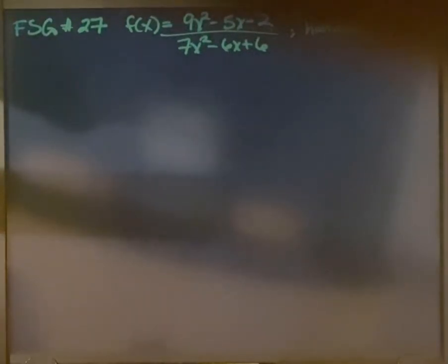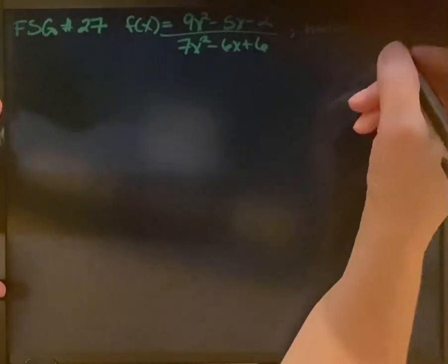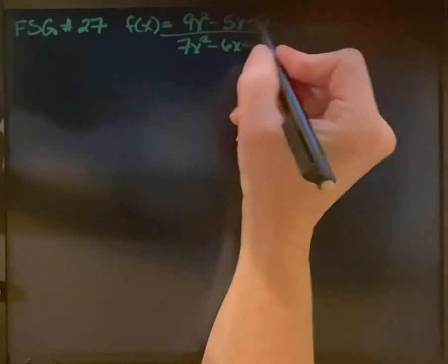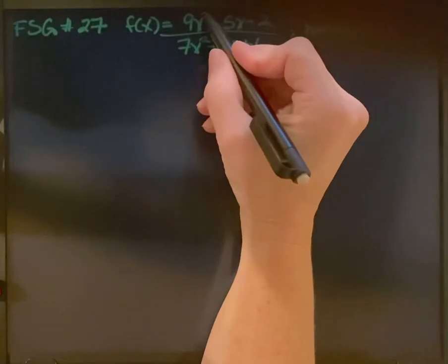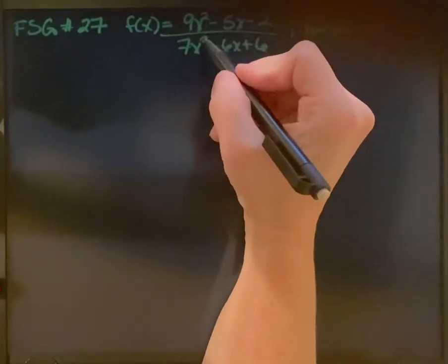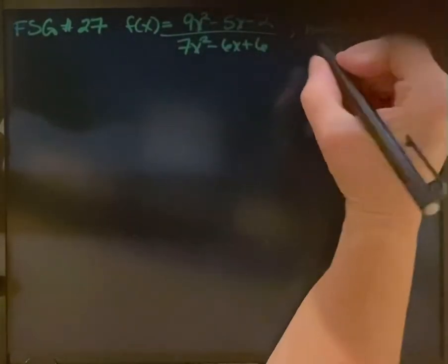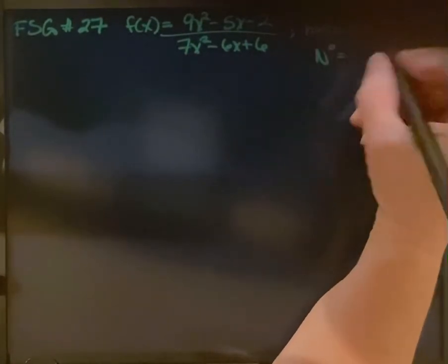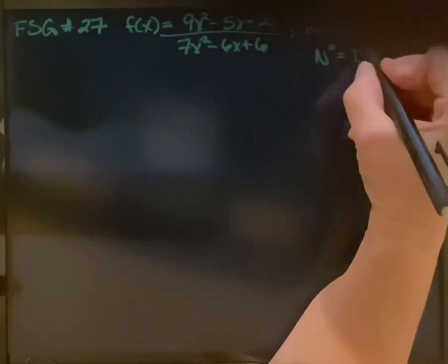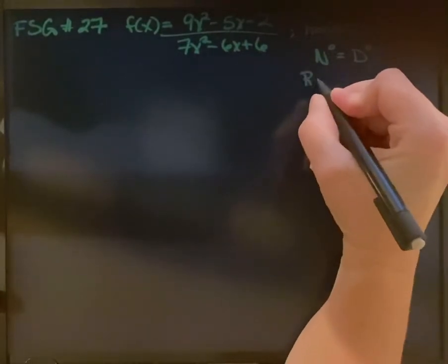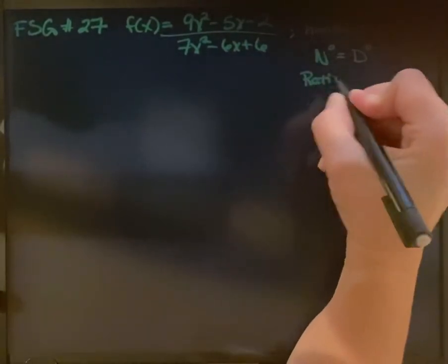This question is asking us for the horizontal asymptotes. If you recall, we need to pay attention to the degrees of the numerator and the denominator. Since the degree of the numerator is equal to the degree of the denominator, that means we're going to take the ratio of the lead coefficients.